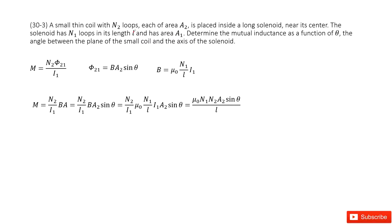Normally, we write down the equations for the inductance. In our textbook, it's M = N2 * phi_21 / I1. So we need to solve for the magnetic flux phi_21 first.